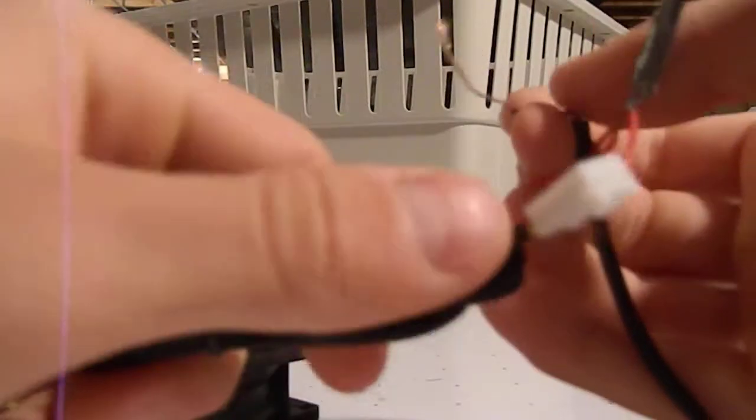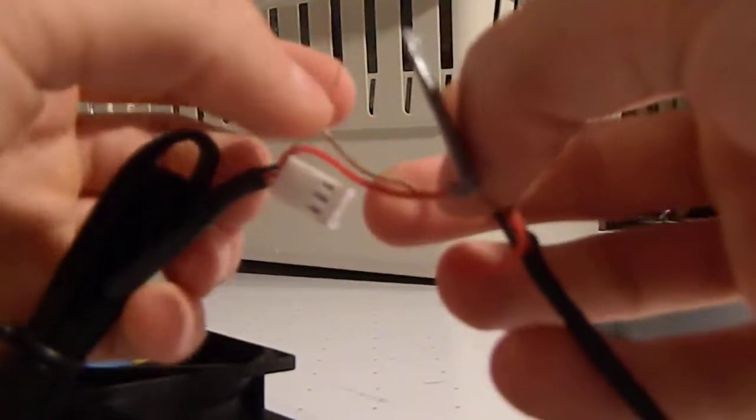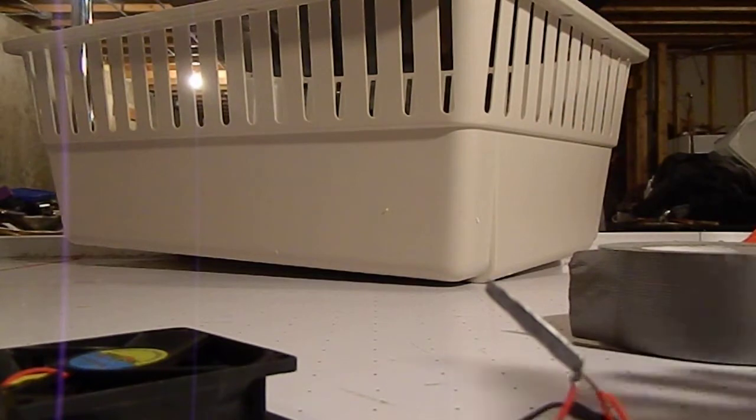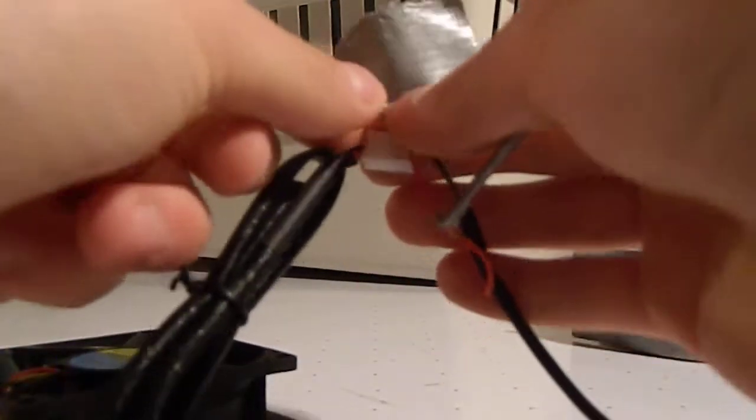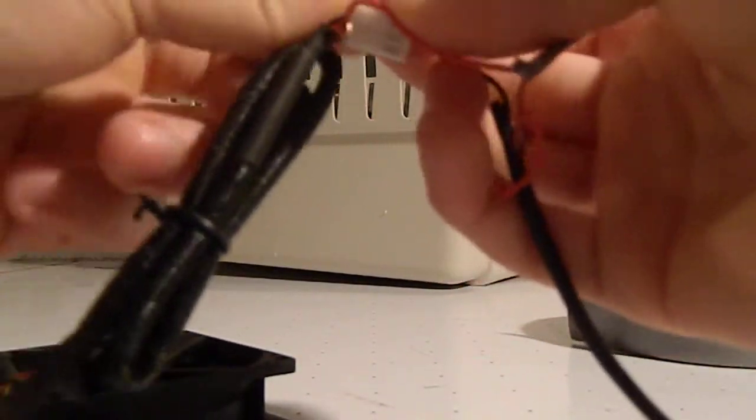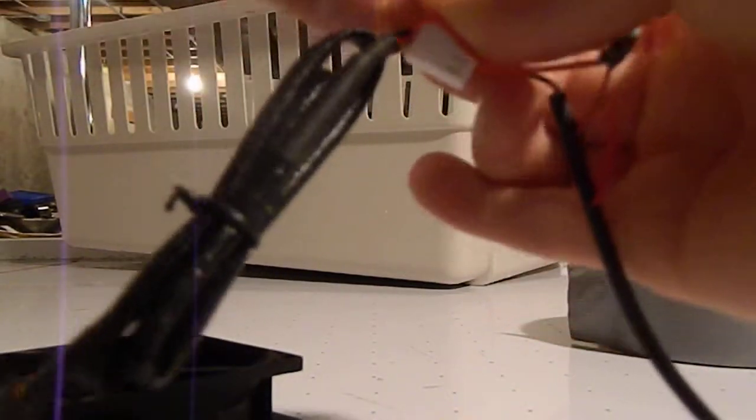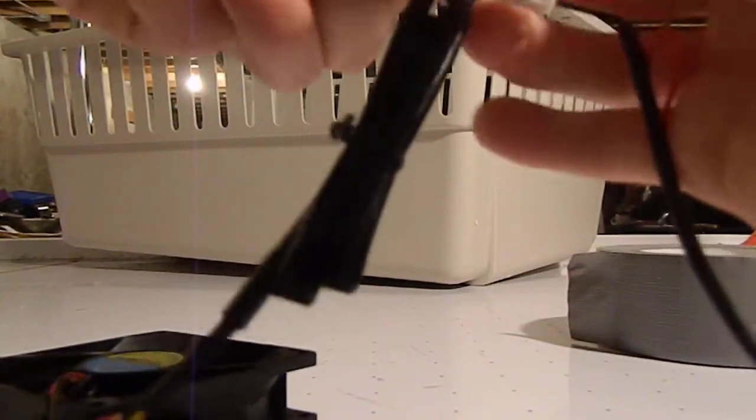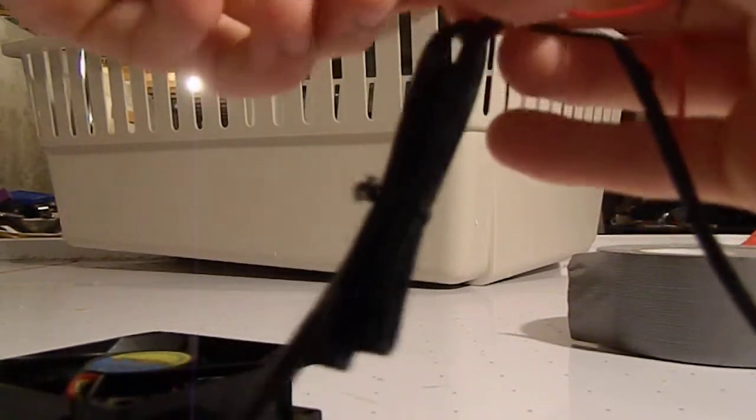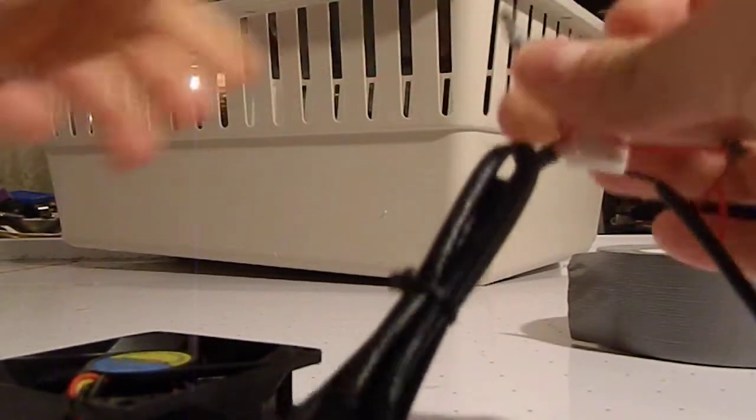Now, you're just going to do the exact same thing for the black one. Take your cell phone charger wire and your fan wire. You're just going to twist it up like a zip tie. And then, as before, you're just going to twist it up. Get it all tight. Now, that's all done.